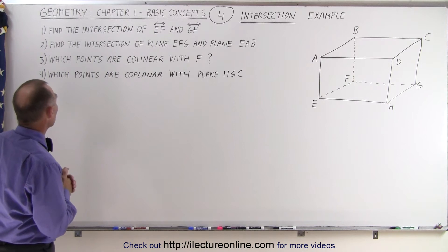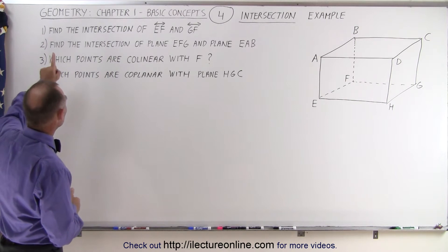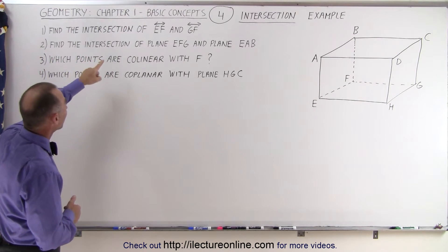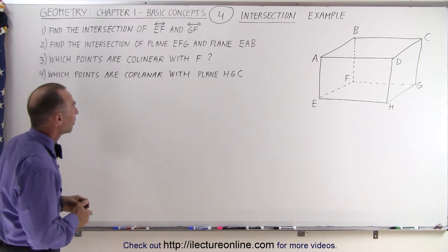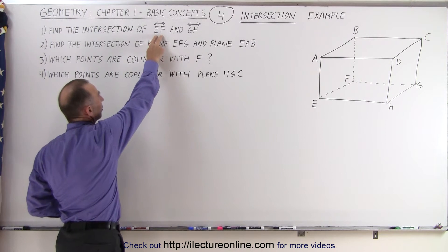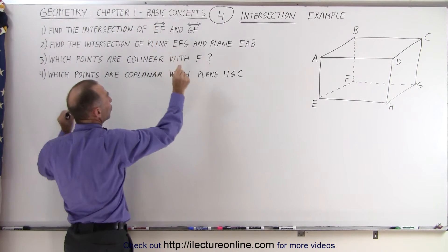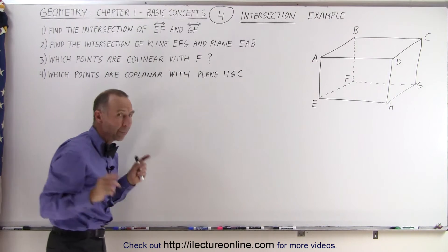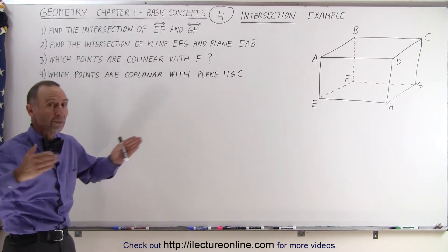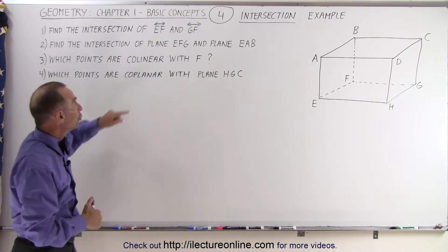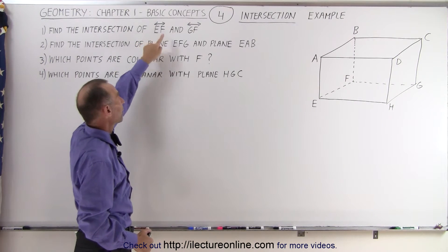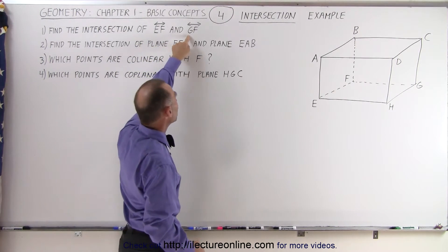Now here we have four questions. First, we're supposed to find the intersection of EF and GF. Now we have two letters here, and a line on top with two arrows, one on each side, that represents a line, and by definition a line goes out to infinity. But it goes through two points E and F. We have another line that goes through the points G and F.